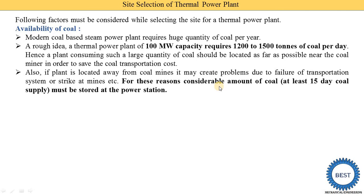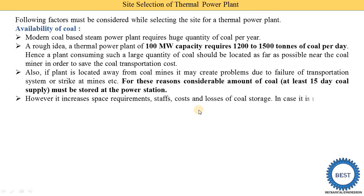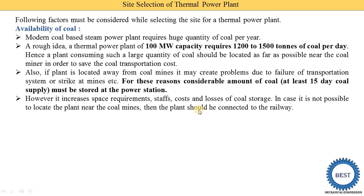We need to store 15 days' worth of coal as storage. For example, if one day requires 1500 tons, then we need to store 1500 tons multiplied by 15 days. However, this increases the space requirement, staff cost, and losses of coal storage. In case it is not possible to locate the plant near the coal mines, then the plant shall be connected to the railway. We need to select sites which are near to coal mines or connected with the railway.